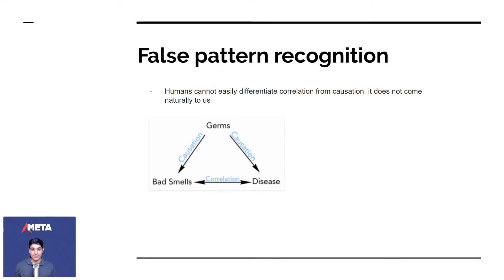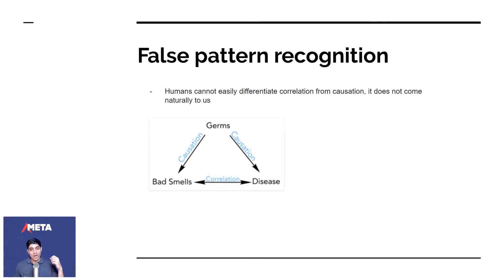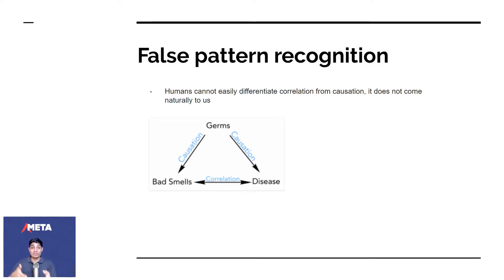False pattern recognition is the bane of humanity. You could define a completely uneducated person as somebody who makes very bad pattern recognitions — attributing the wrong things to the wrong things. One example: germs cause bad smells and germs cause disease, but just because somebody smells bad doesn't mean they have disease, even though those two things are often found together. Just because two things are happening together doesn't mean it's causation. Our job with accurate pattern recognition is to find what is causing things versus what two things are just correlated or coincidental.